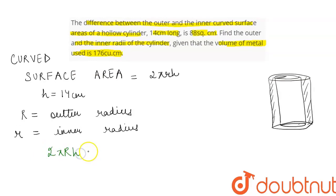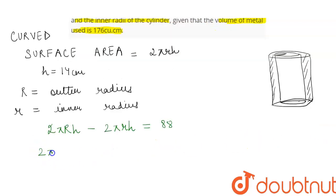So we can write: 2πRh - 2πrh = 88. We can take 2πh common from this and we will be left with capital R minus small r equal to 88 divided by 2πh.